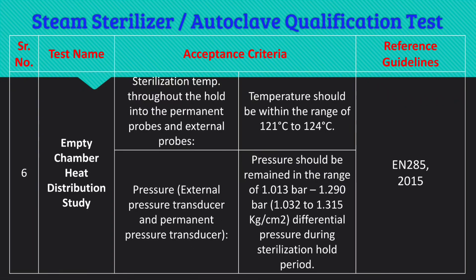For the empty chamber heat distribution study, there are several acceptance criteria to monitor. The sterilization temperature throughout the hold, measured via permanent probes and external probes, should be within the range of 121°C to 124°C — that is, a +3°C band from 121°C — as given in EN 285:2015.